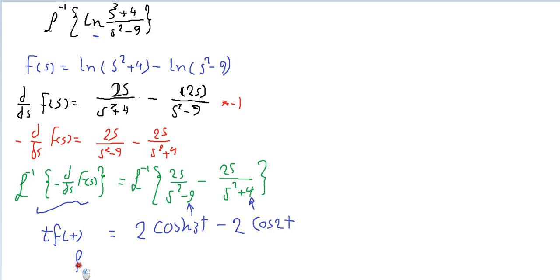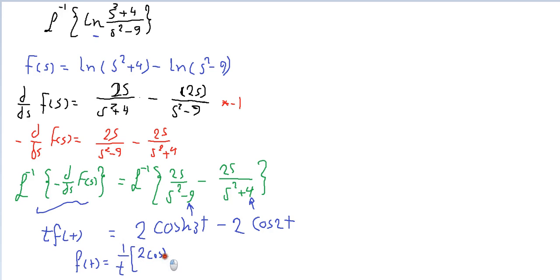So t·f(t) equals 2 cosine(3t) minus 2 cosine(2t). Therefore f(t) is obtained by dividing by t, giving: f(t) = (1/t) × (2 cosine(3t) − 2 cosine(2t)).